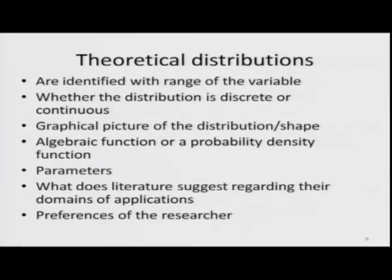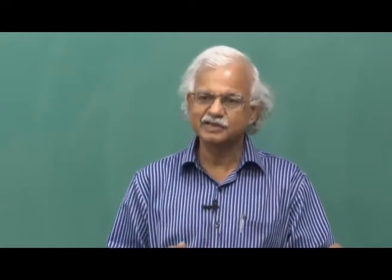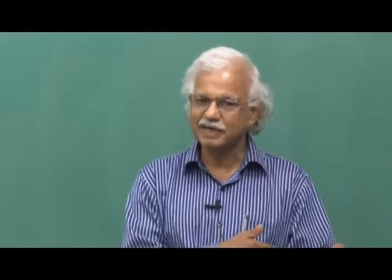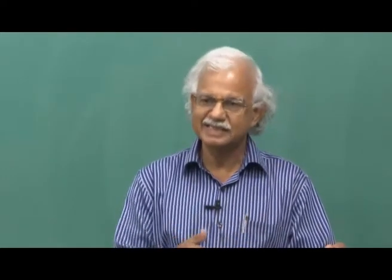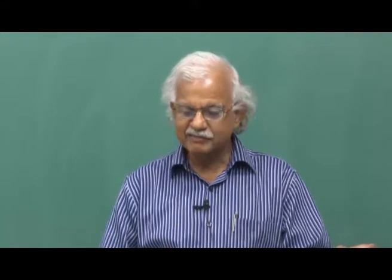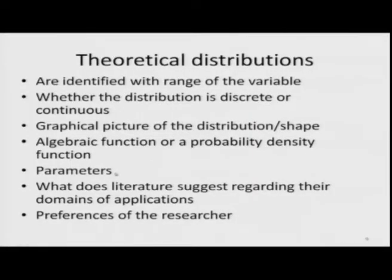Theoretical distributions are identified by a number of considerations: the range of the variable, whether the distribution is discrete or continuous, the graphical shape — different distributions have different shapes; a normal distribution has a very different shape from a negative exponential. The negative exponential starts from a peak at the mode and values constantly decline, whereas in the normal distribution values rise from minus infinity, reach a peak, and then start declining. Parameters are estimated and you look at what the literature suggests regarding their domains of application.